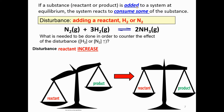According to Le Châtelier's Principle, if a substance is added to a system at equilibrium, the system will react to consume some of that substance. So when we look at the disturbance — adding a reactant, that is nitrogen or hydrogen — the concentration is increasing because we are adding a reactant. Our goal now is to figure out how to make the system balanced again.